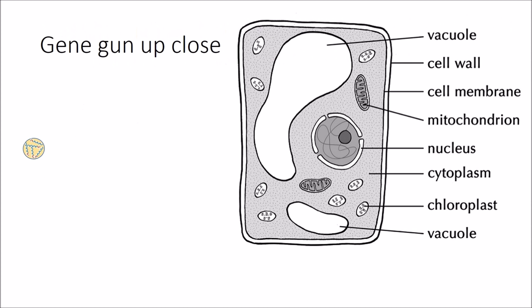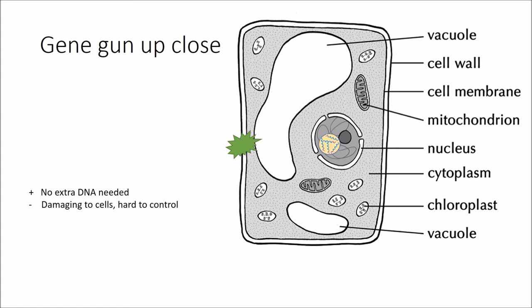Let's look at how a gene gun works up close. The gold particle is coated with DNA that includes the promoter, the sequence for the desired trait, and a selection marker. The gold particles are fired at the plant cells with enough force to go through the cell wall and plasma membrane and hopefully land in the nucleus. This strategy has the advantage of not needing extra DNA from the plasmid, but it is damaging to cells and hard to control.